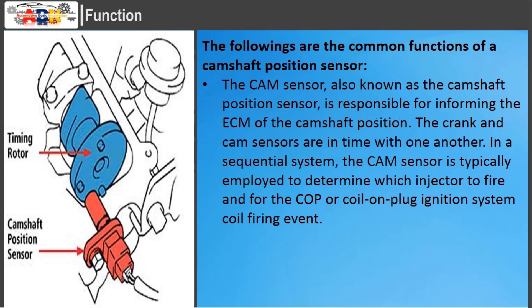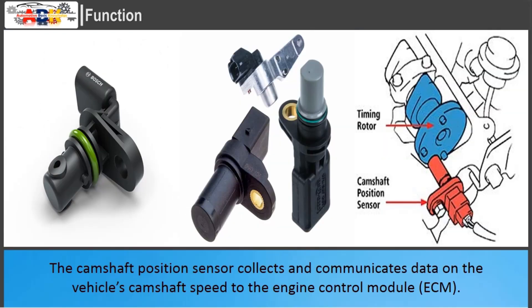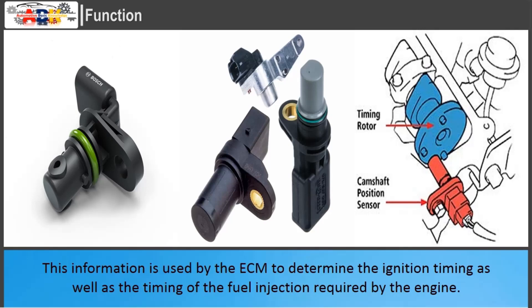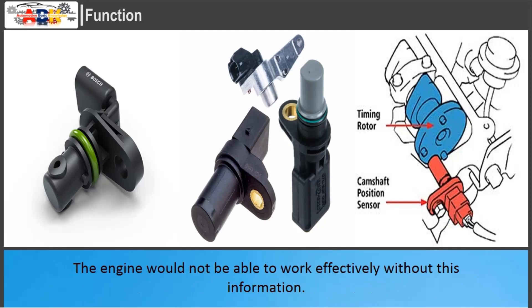The CAM sensor, also known as the camshaft position sensor, is responsible for informing the ECM of the camshaft position. The crank and cam sensors are in time with one another. In a sequential system, the CAM sensor is typically employed to determine which injector to fire and for the COP or coil-on-plug ignition system coil firing event. The camshaft position sensor collects and communicates data on the vehicle's camshaft speed to the ECM, which uses it to determine ignition timing and fuel injection timing. Without this information, the engine would not be able to work effectively.